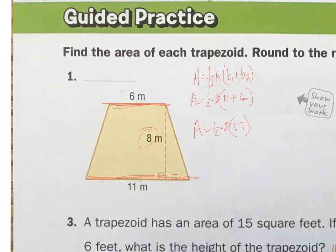So it's 8 times 17. I'm going to do my multiplication in order. Area equals one-half times 8, which is 4, times 17. And 4 times 17 is 68 meters squared. It's the area, so it's 68 meters squared.